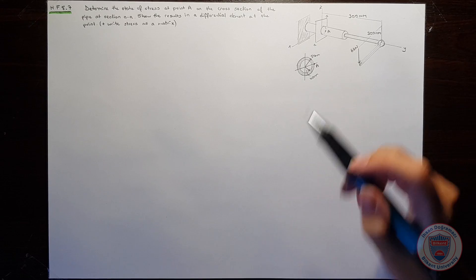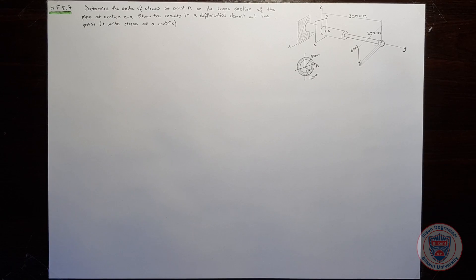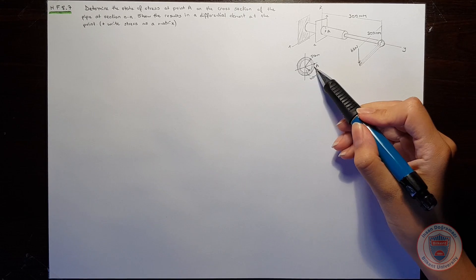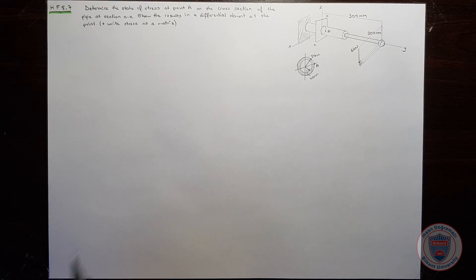In this problem, we have a pipe as shown in the figure. Our goal is to determine the state of stress at point A on the cross-section of the pipe. We will also show the results in a differential element at the point. To solve the question, we will first need to write the equations for the forces and the moments.